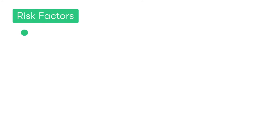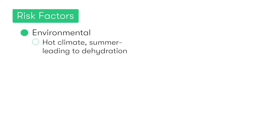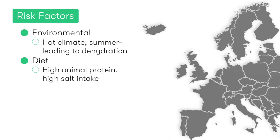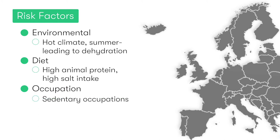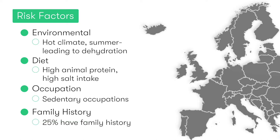Moving on to risk factors for the development of urinary tract calculi. These include environmental factors, for example, living in a hot climate and being in the summer months of the year, both of which can result in dehydration and the production of more concentrated and lower volume of urine. In terms of dietary risk factors, there's a higher risk of stone development with the western diet, particularly one that's high in animal protein and high in salt intake. Patients who have sedentary occupations and lifestyles are also at higher risk. Finally, a family history of stones is a significant risk factor, with 25% of patients with renal stones having a positive family history.